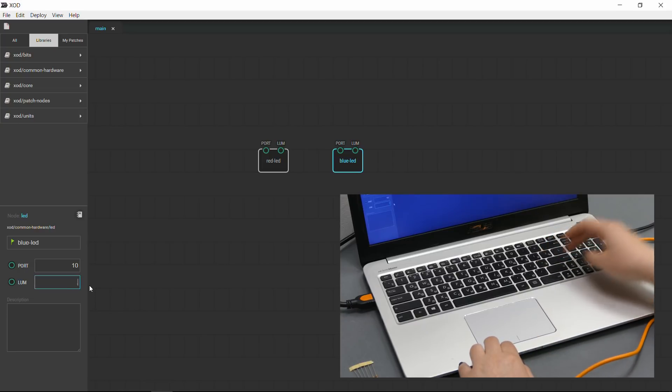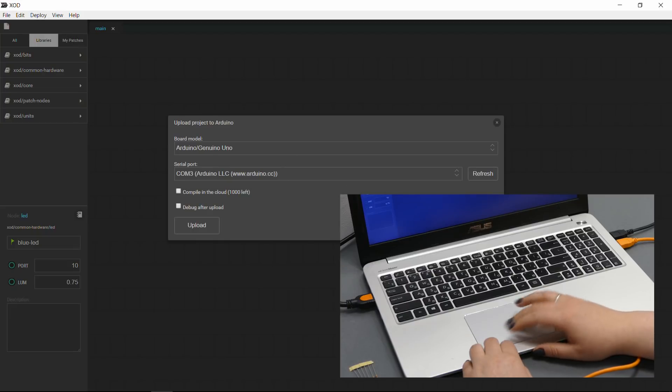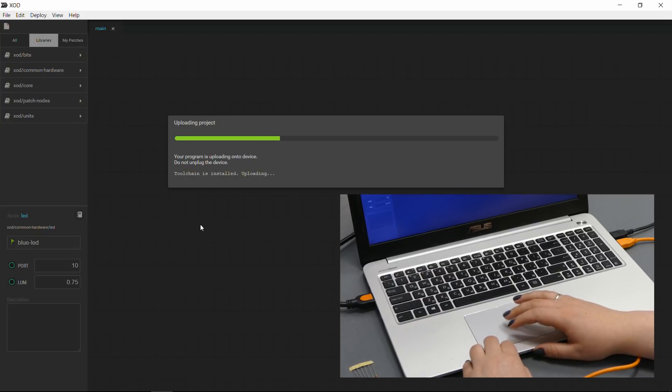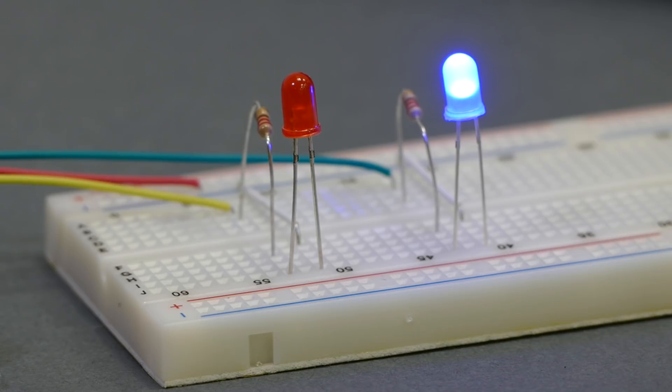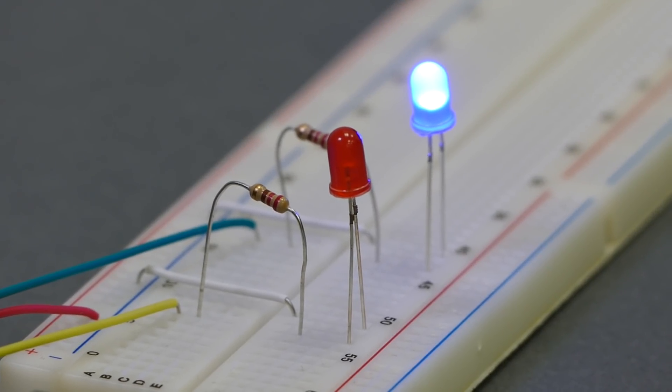Let's go ahead and plug this into our board. Okay. And then we will upload to Arduino. Click the upload. Give it a few seconds. And then the blue light should be half on and the red light is still off because we didn't change that value.